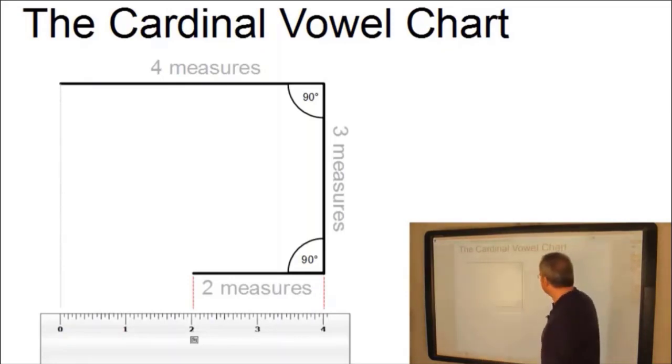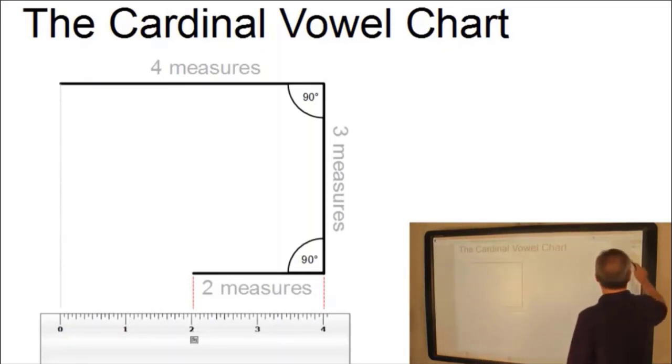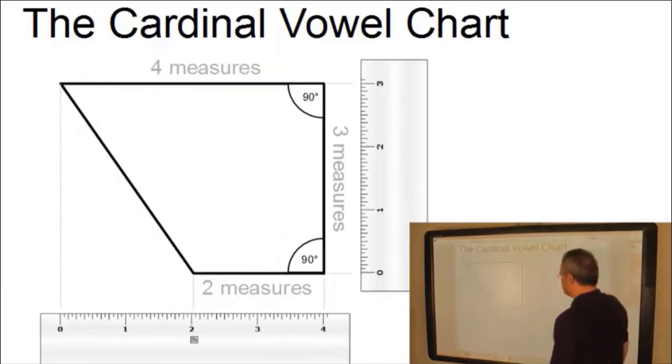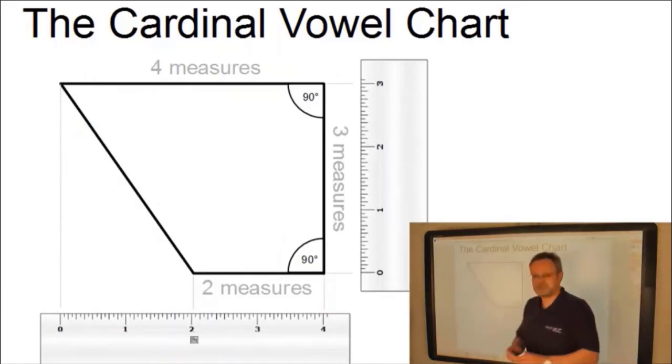And finally, we now link the free ends of the two horizontal lines so that we get the basic dimensions of the cardinal vowel chart.